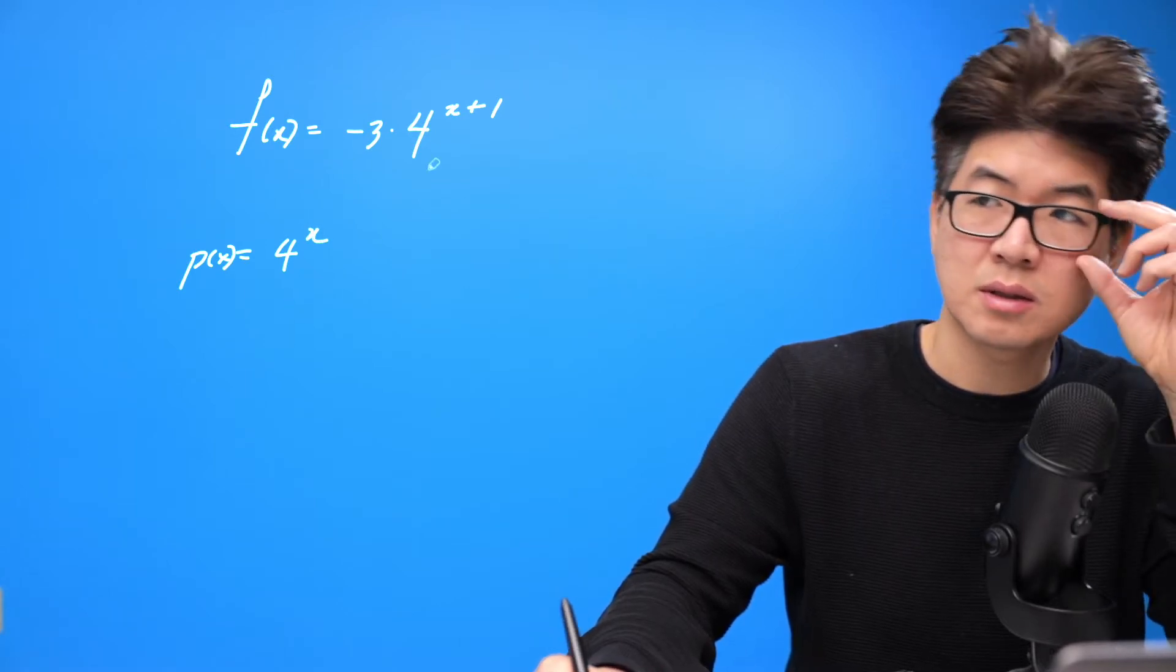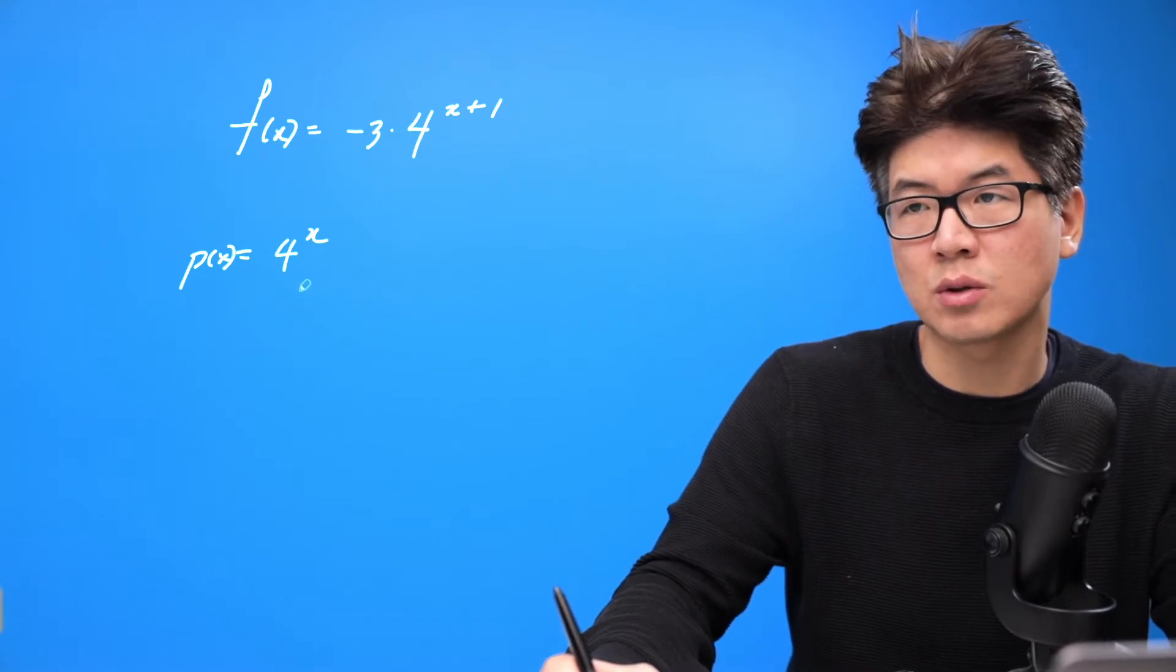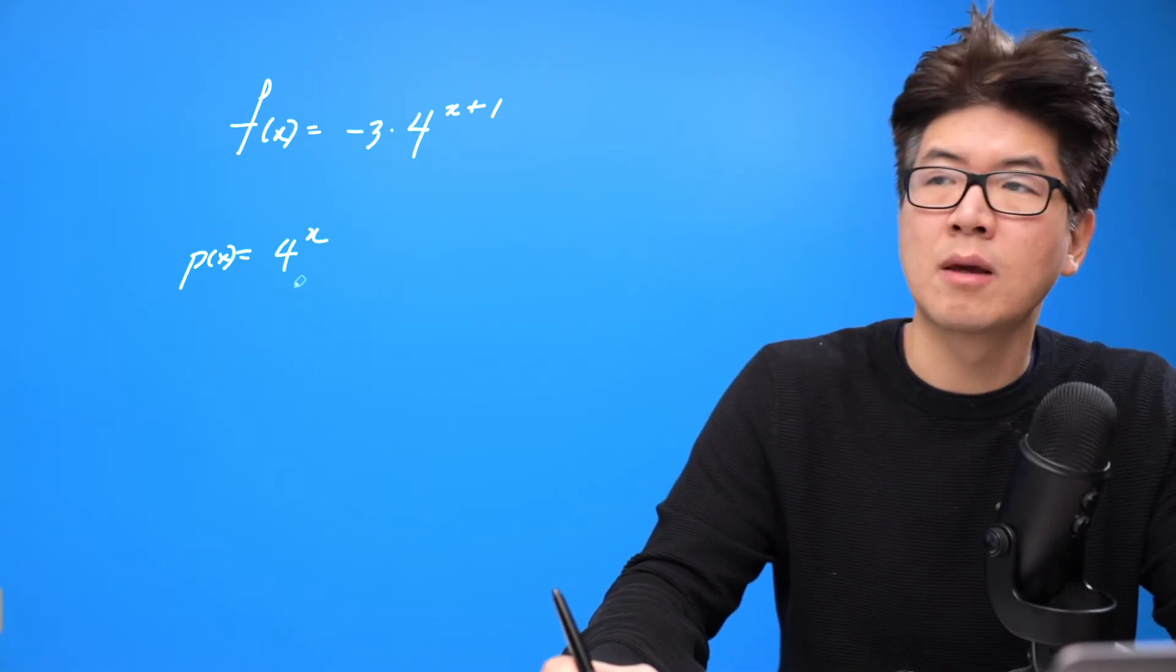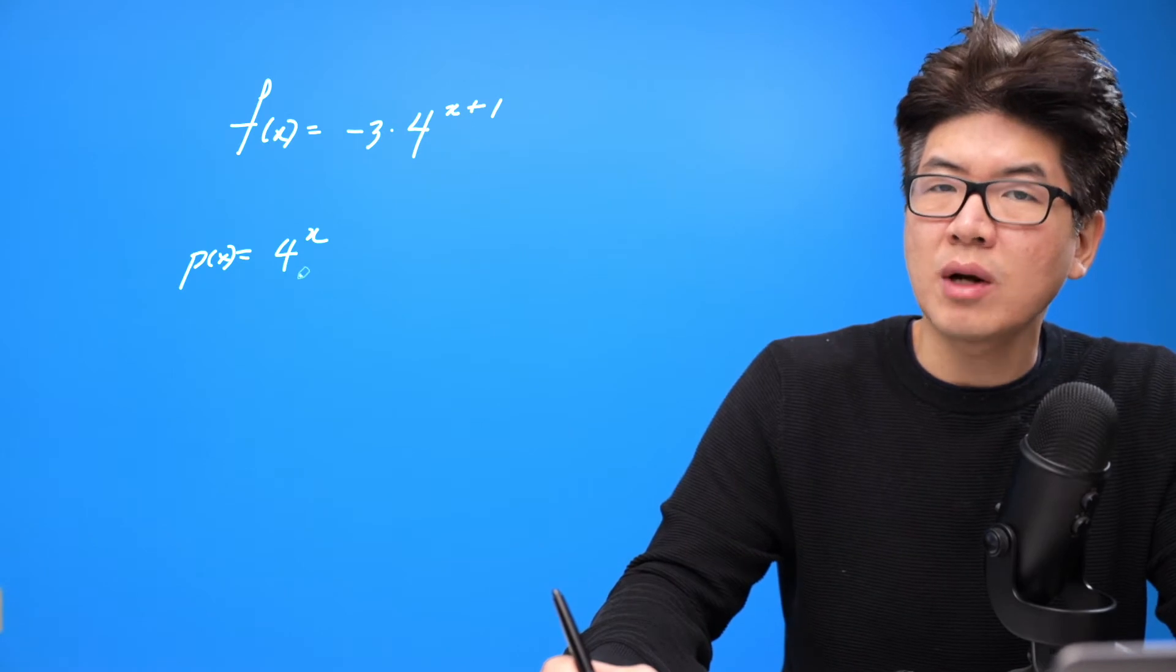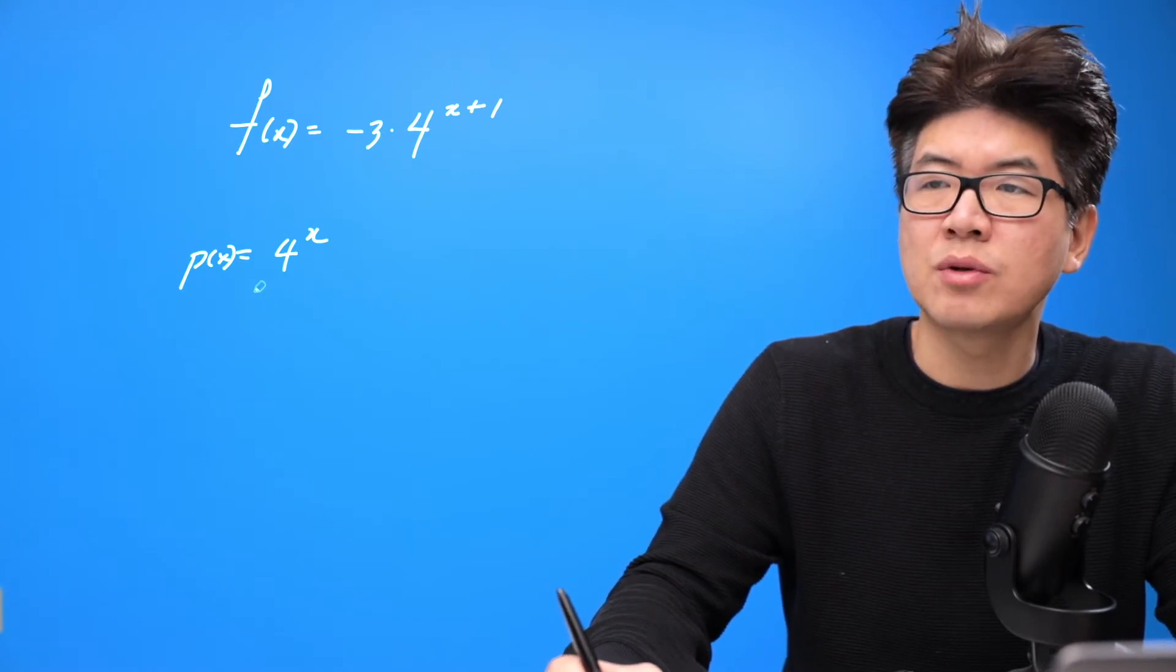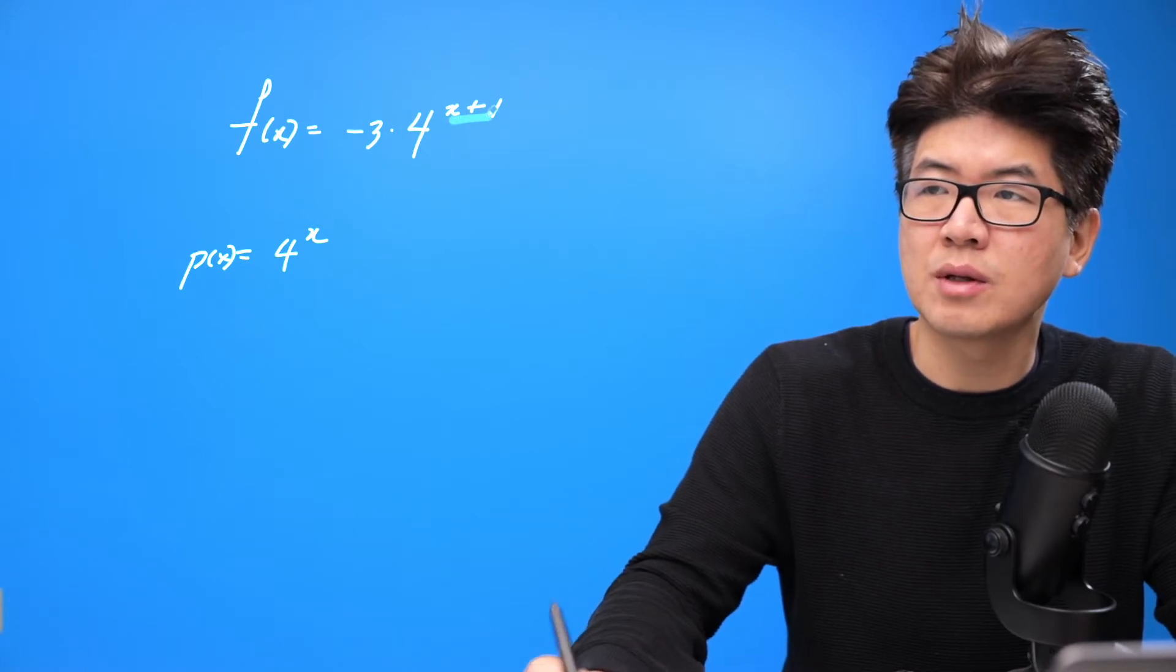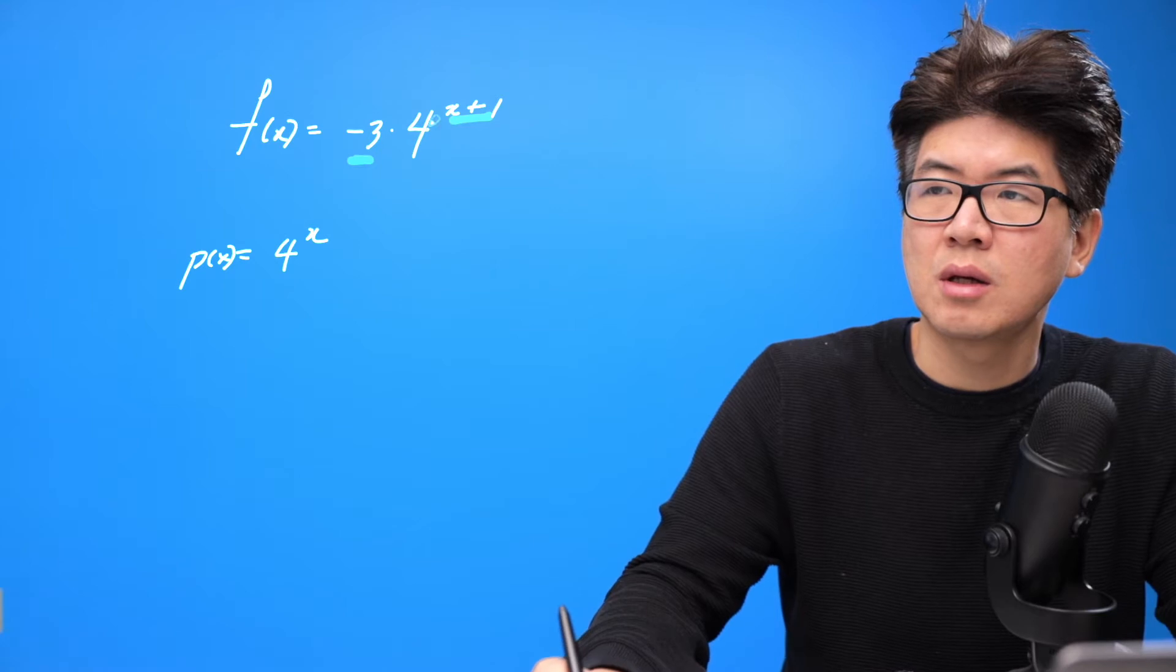Okay, so this is going to be a modified version of this function. Okay, so hopefully you can see that. And then to correctly identify the transformation, we have to ask ourselves, okay, there's two things that's happening here, this and this.